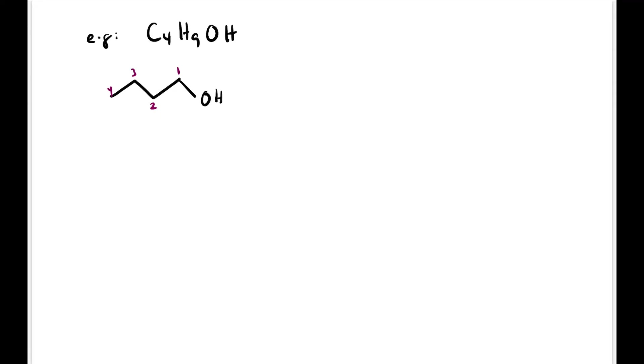When there's a functional group, we number carbon 1 at the carbon closest to the functional group, giving it the lowest number.